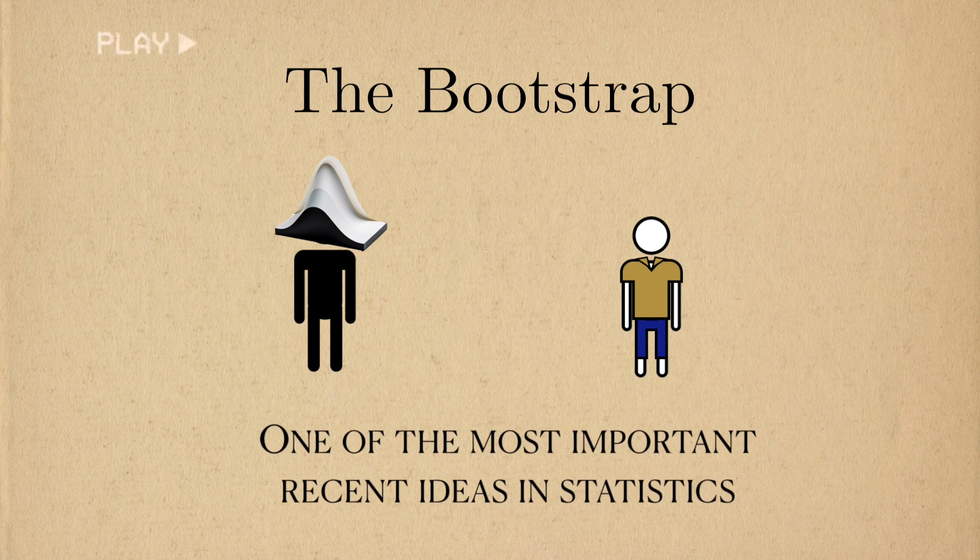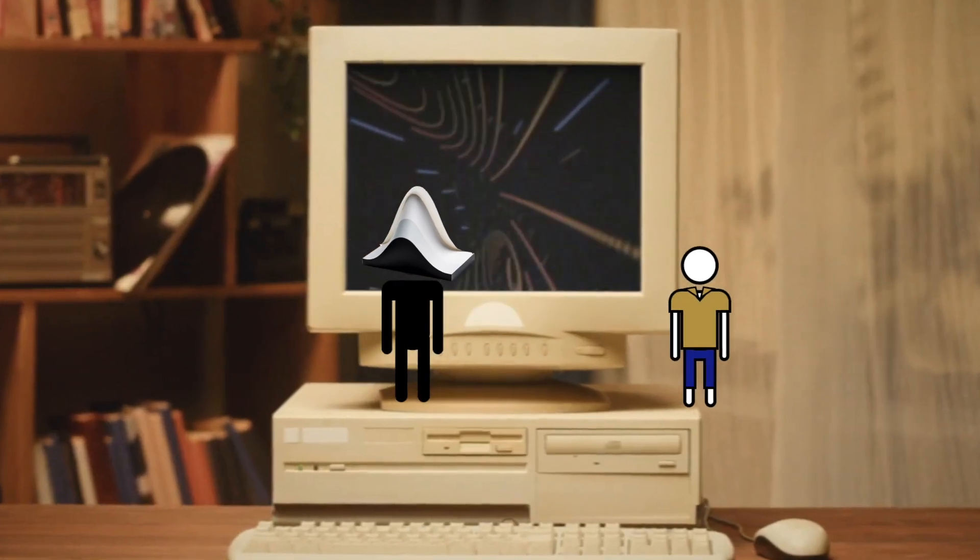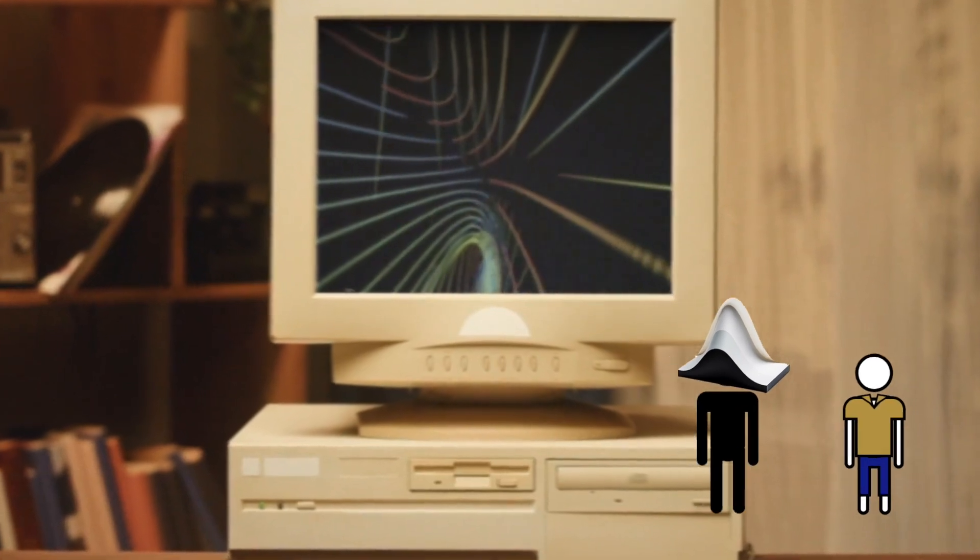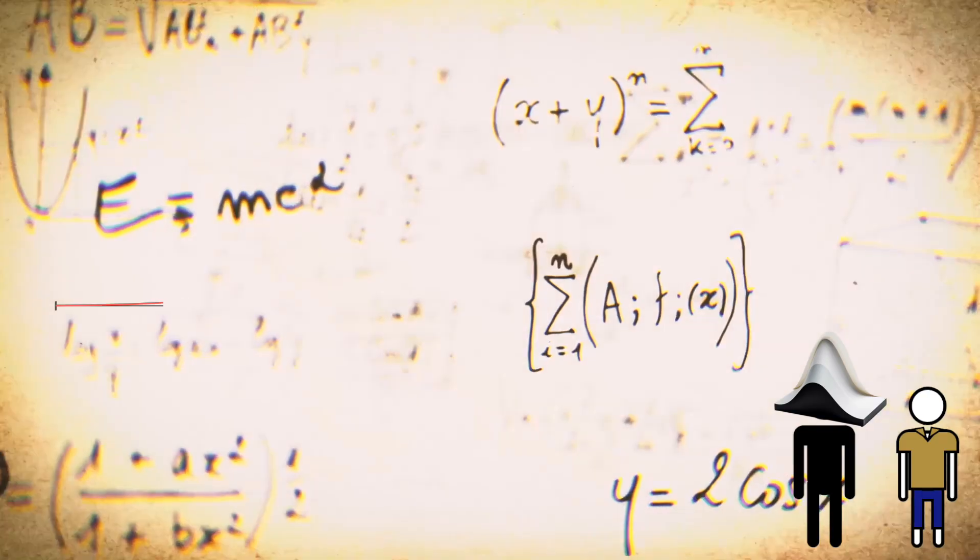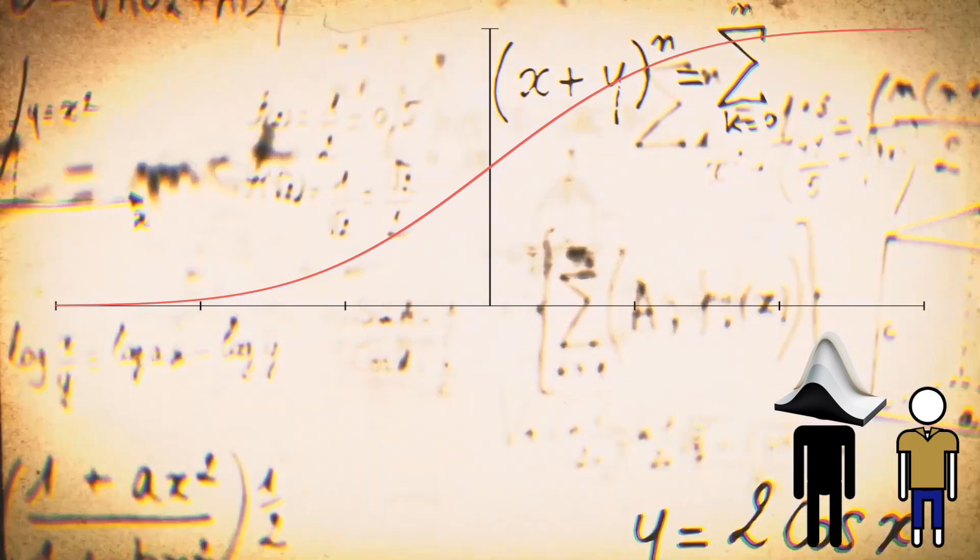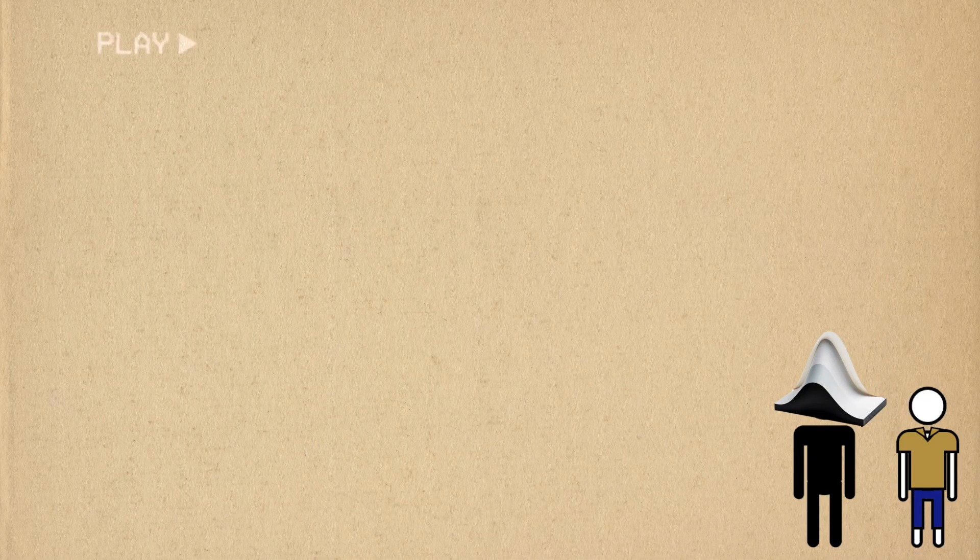The bootstrap also exemplifies one of the important turning points in the field of statistics. In the dark times, before we all had a powerful computer in our pocket, statistics was done with pen, paper, and brainpower. To understand the sampling distribution, statisticians often needed to derive it using math. And, as I learned during the first year of my PhD, math is hard.